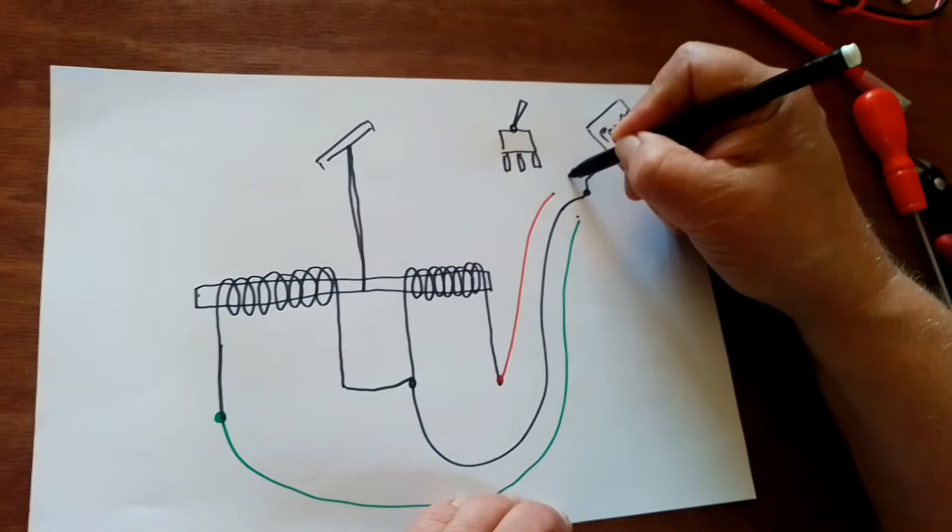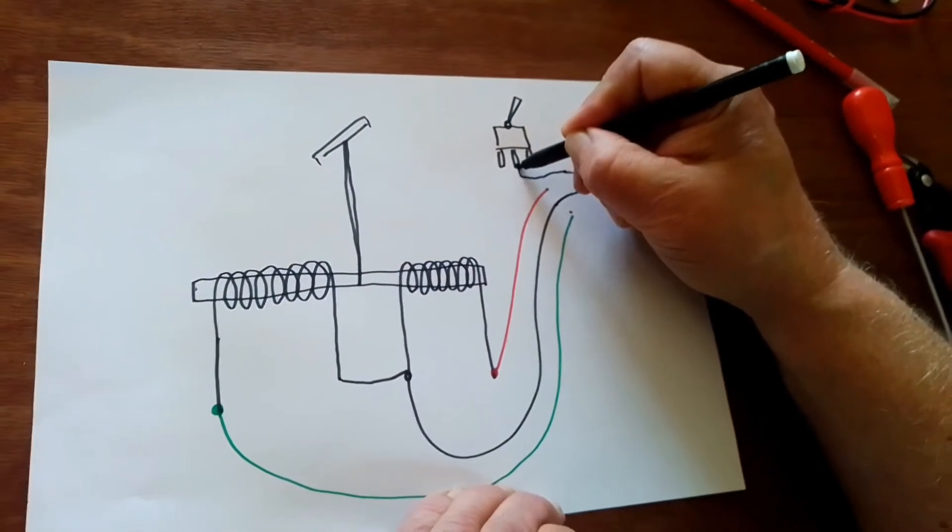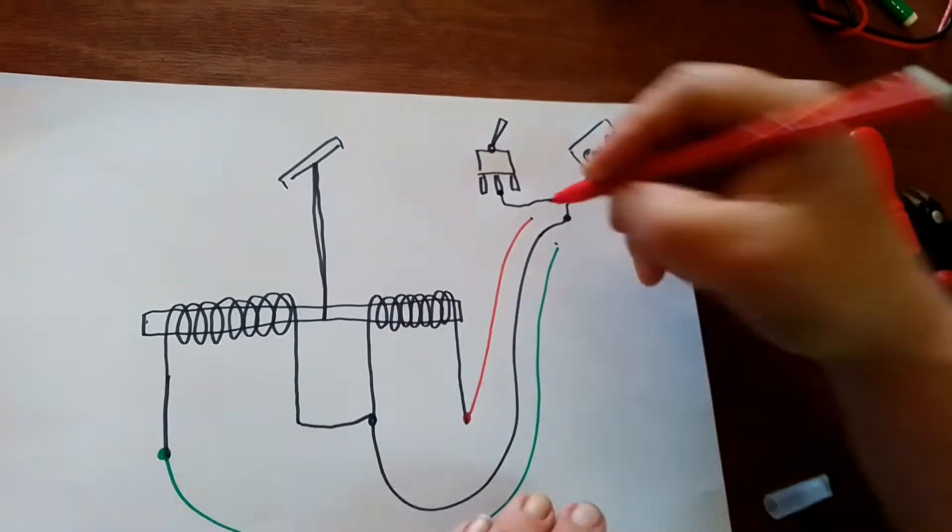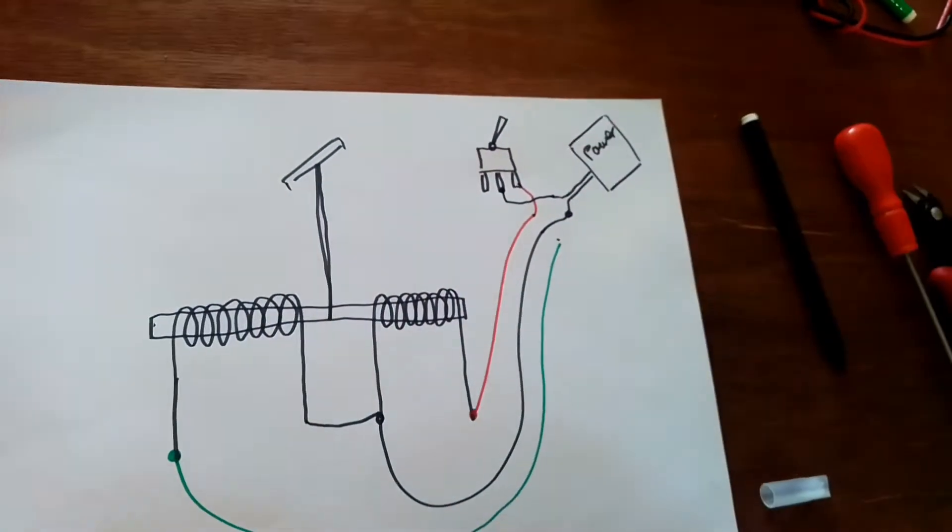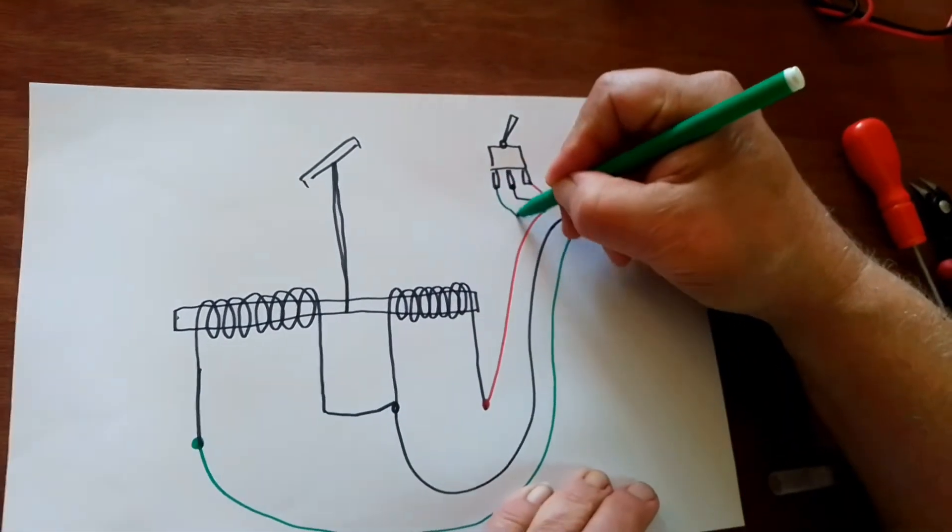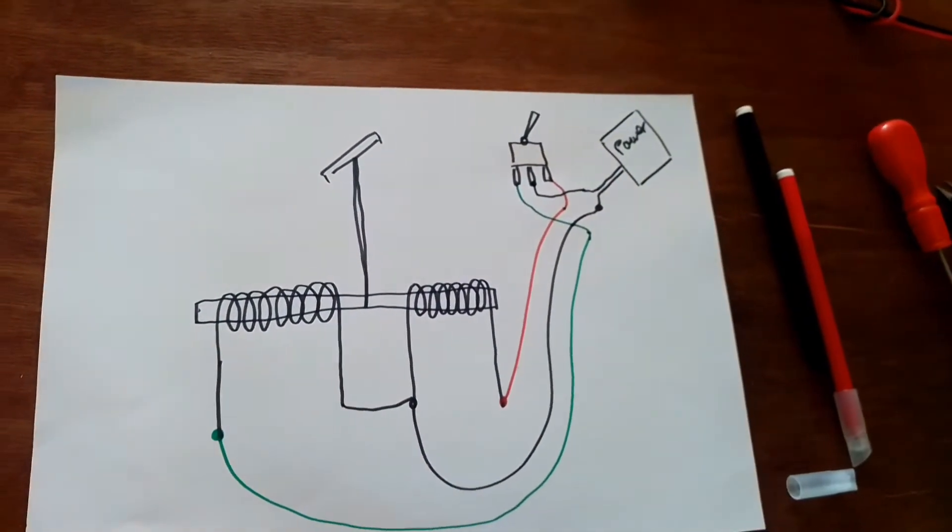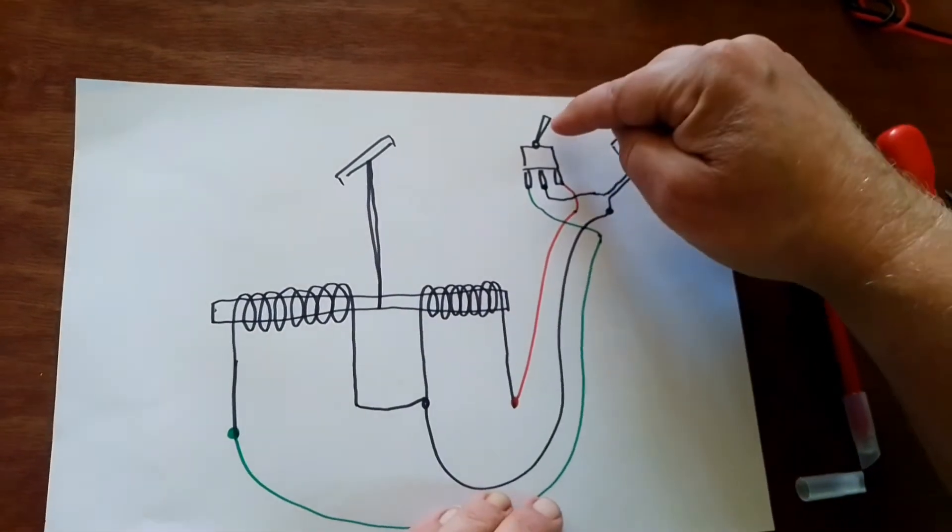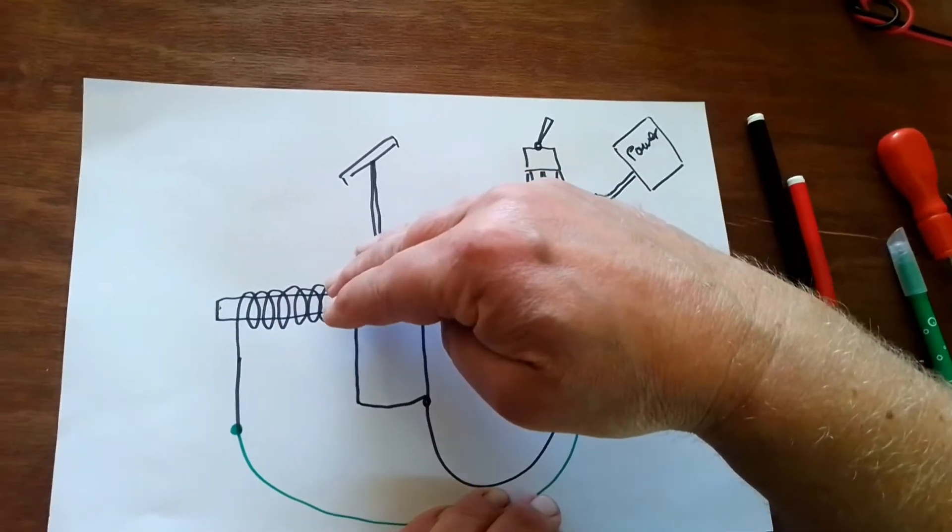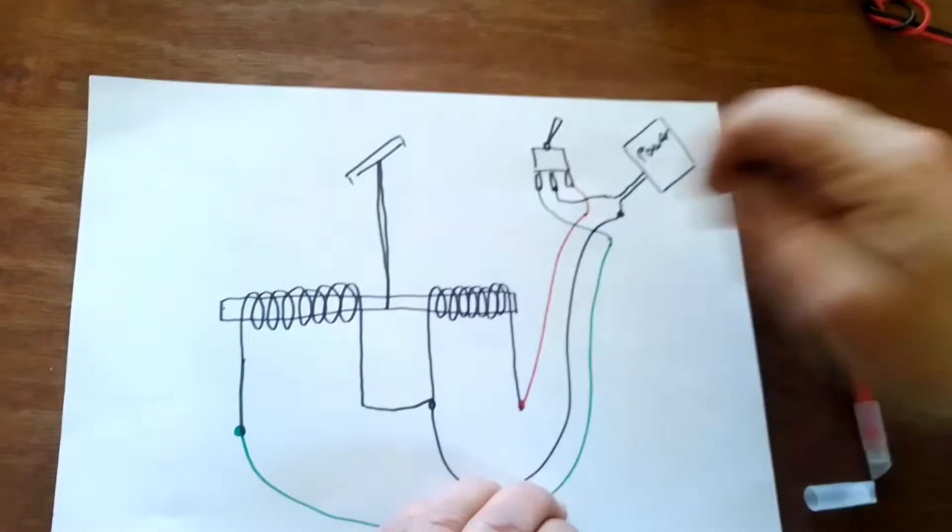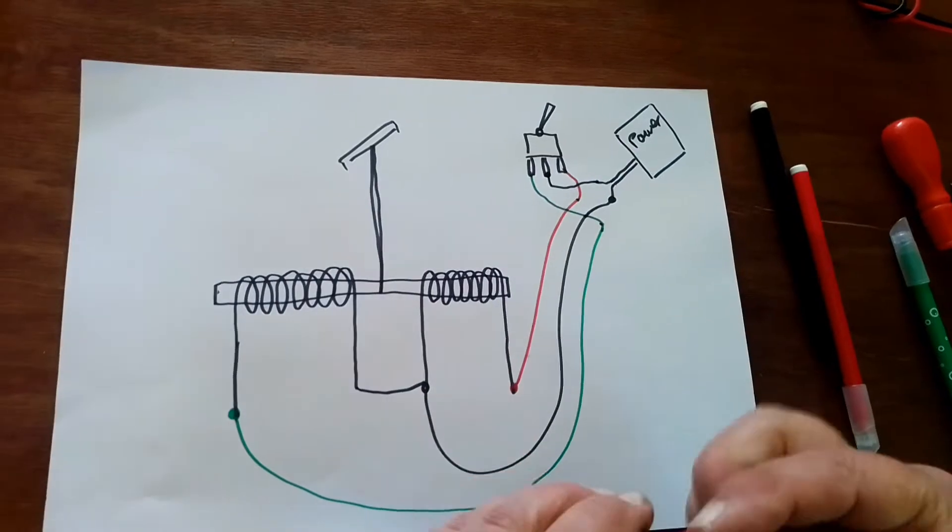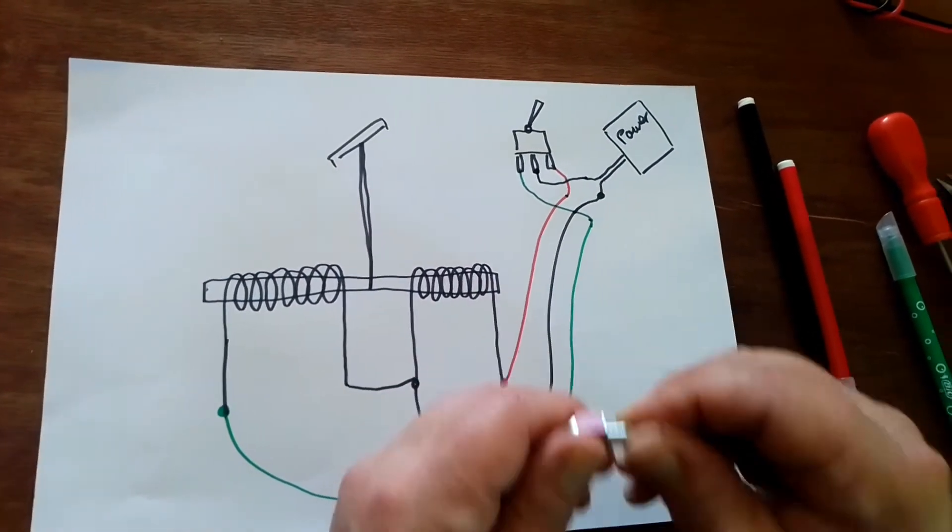So all the wiring you need to do is join this onto the middle, join the red onto one side, and the green onto the other side. It might make the point when you move the lever one way, the point might move the opposite way to what you want. So you could undo the red and the green and swap them over if that's a problem. But you could also just turn the switch around.